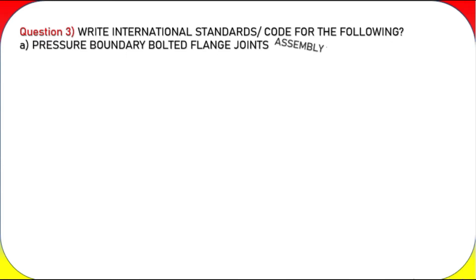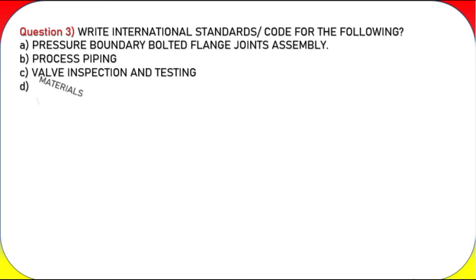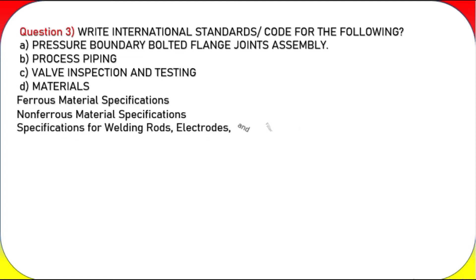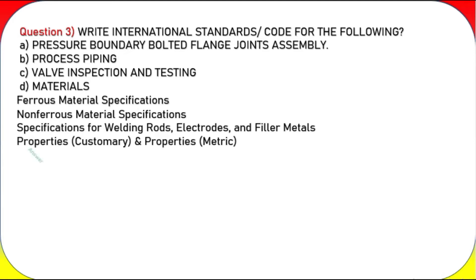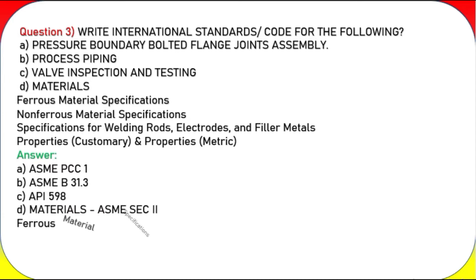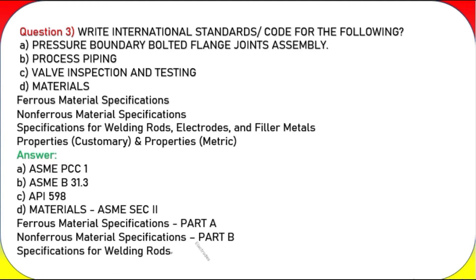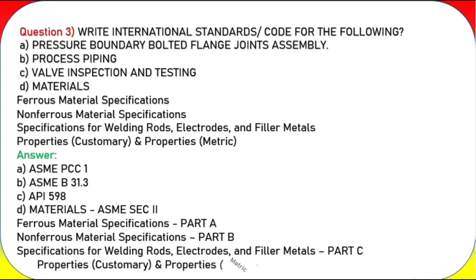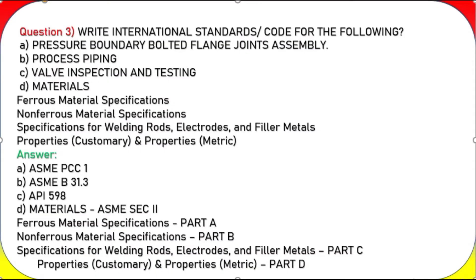Question 3: Write the international standard/code for: (a) pressure boundary bolted flange joint assembly, (b) process piping, (c) valve inspection and testing, (d) materials — ferrous material specifications, non-ferrous material specifications, specifications for welding rods/electrodes and filler metals, properties customary and metric. Answers: (a) ASME PCC-1, (b) ASME B31.3, (c) API 598, (d) ASME Sec. 2 — Part A (ferrous), Part B (non-ferrous), Part C (welding rods/filler metals), Part D (properties).